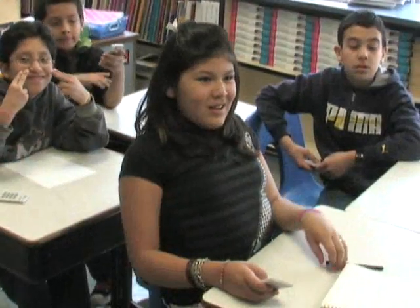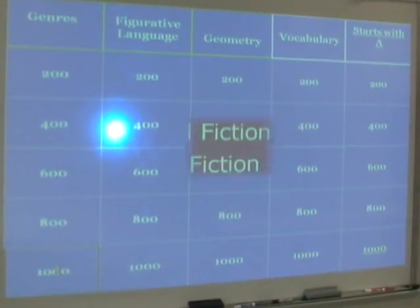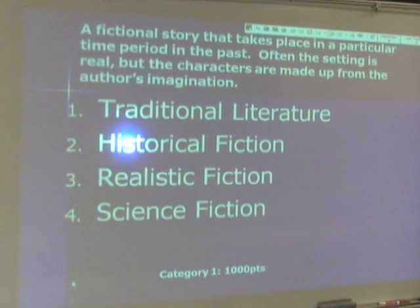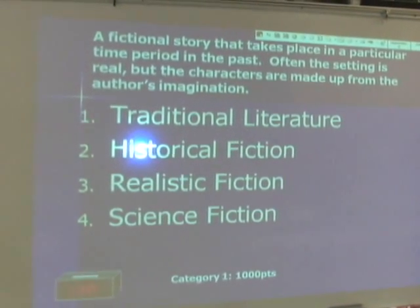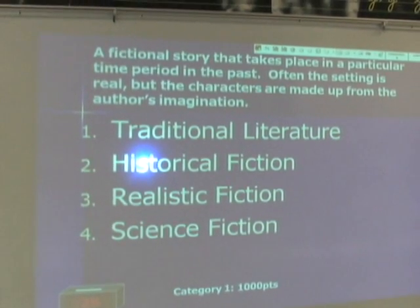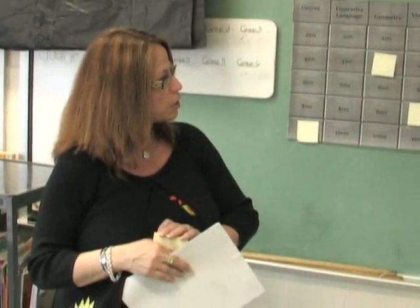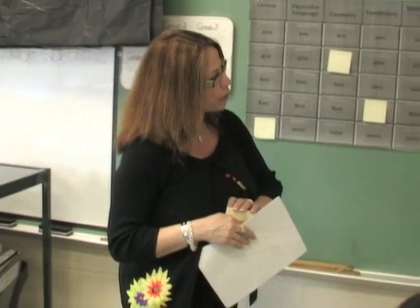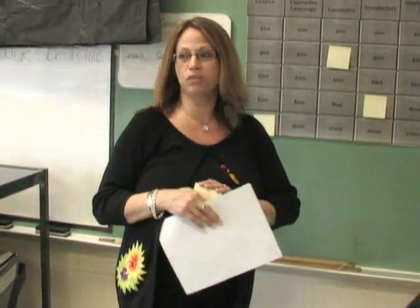Who wants to try? Stephanie, give it a shot. Genre for 1,000. A fictional story that takes place in a particular time period in the past. Often the setting is real, but the characters are made up from the author's imagination. One, traditional literature. Two, historical fiction. Three, realistic fiction. Or four, science fiction.